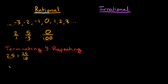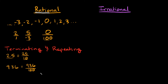Another example of a terminating decimal is 9.36. This is also considered a rational number because I can rewrite it as a ratio of two integers: 936 over 100. Both 936 and 100 are integers, so 9.36 is rational.